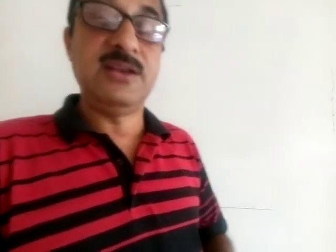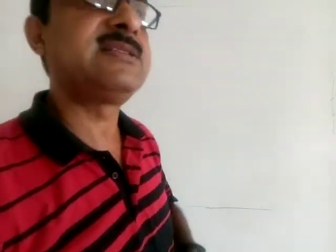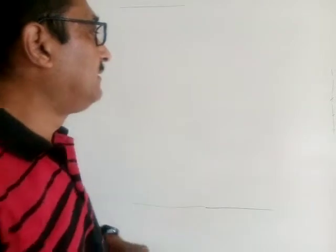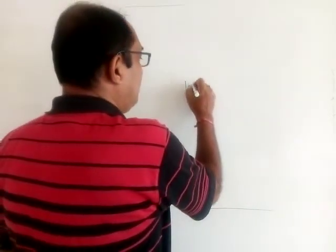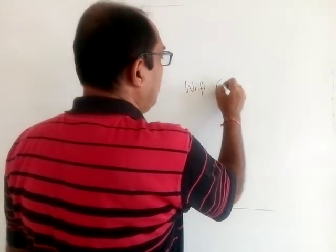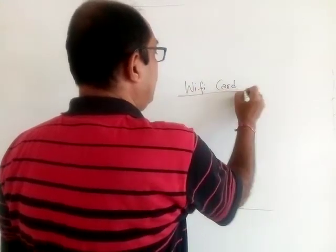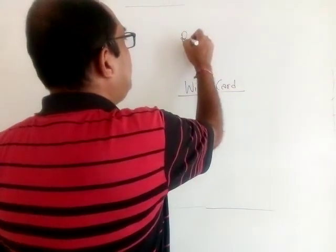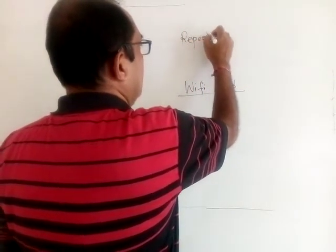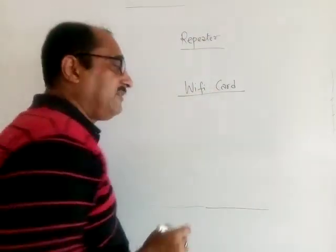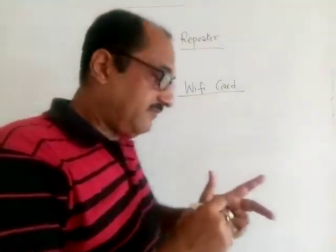Hello class, we will continue with the networking chapter. We discussed a few networking devices in our last class. I think two are left out — one is called the Wi-Fi card. You all know what Wi-Fi is. Another one was the repeater. First, let me tell you what is the Wi-Fi card.